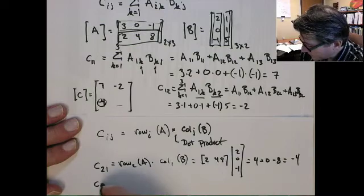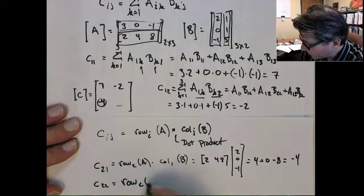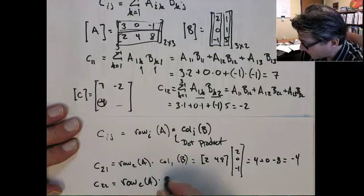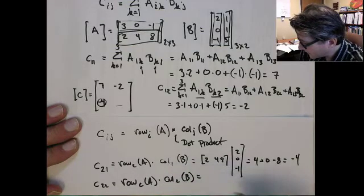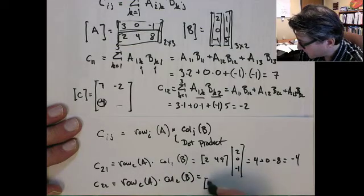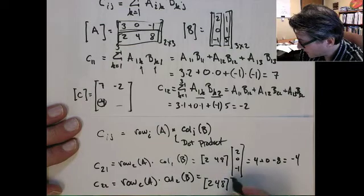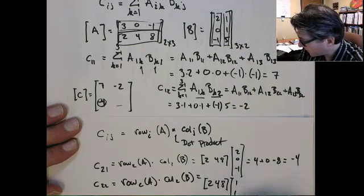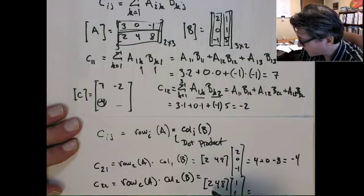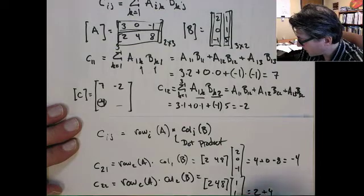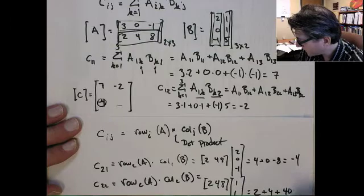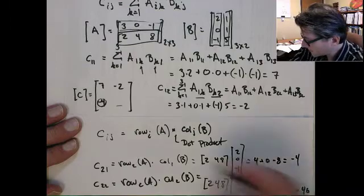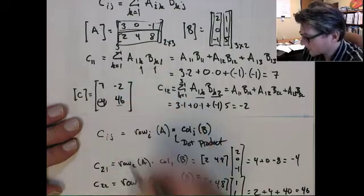And then likewise, this one, C22 would be row two of A dotted with column two of B. And so that would give us two, four, eight. Second column would be one, one, five. And that would be two times one, which is two. Four times one is four. And then eight times five is forty. And so that would be forty-six.